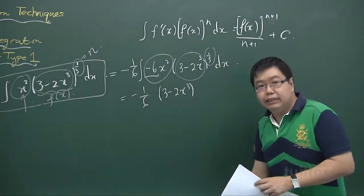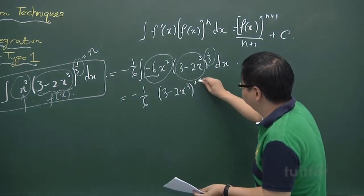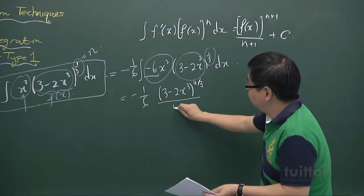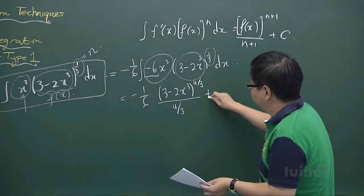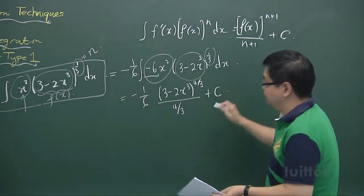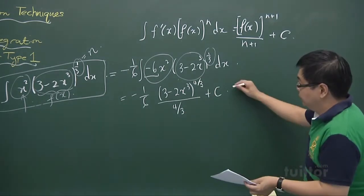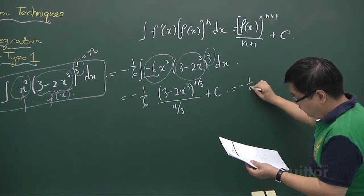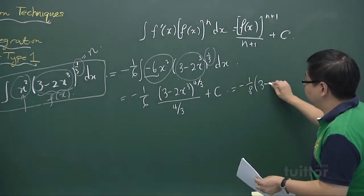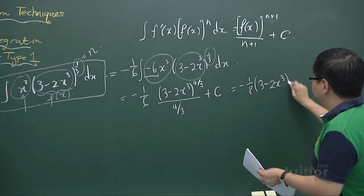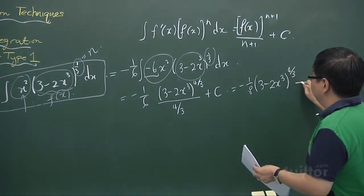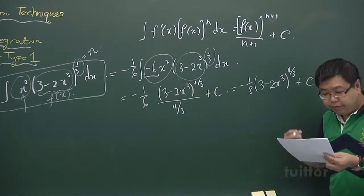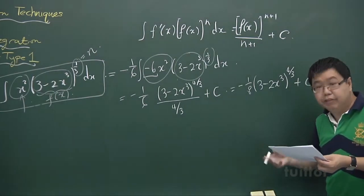So we introduce a minus 6 into the integrand and balance it by multiplying outside by minus 1 over 6. Applying the formula directly: fx to the power of n plus 1 — since n is one third, n plus 1 is 4 over 3 — divided by 4 over 3, plus constant c. Simplifying, we get minus 1 over 8 times (3 minus 2x³) to the power of 4 over 3, plus c. That is the solution to the first question.